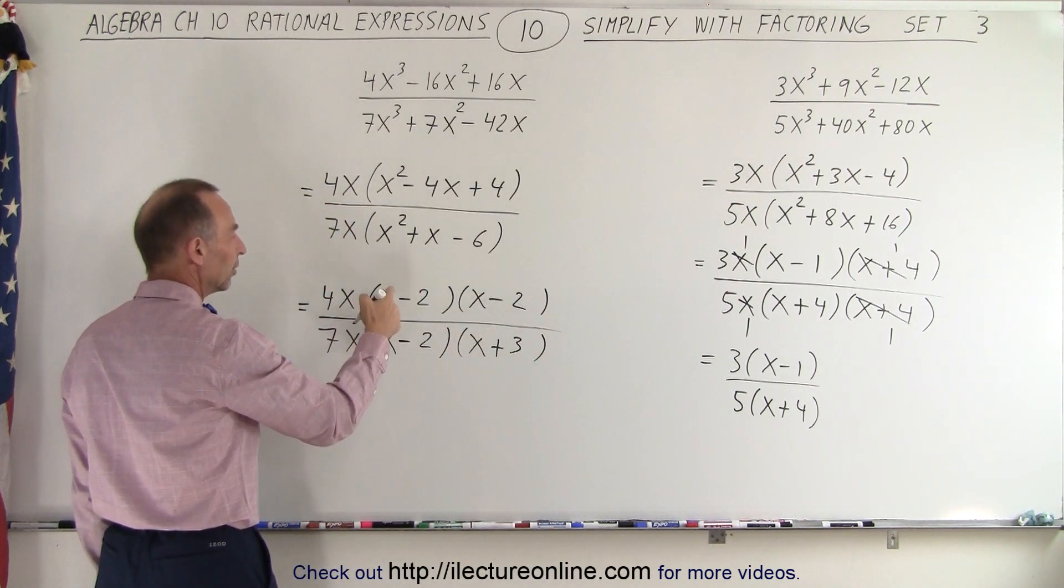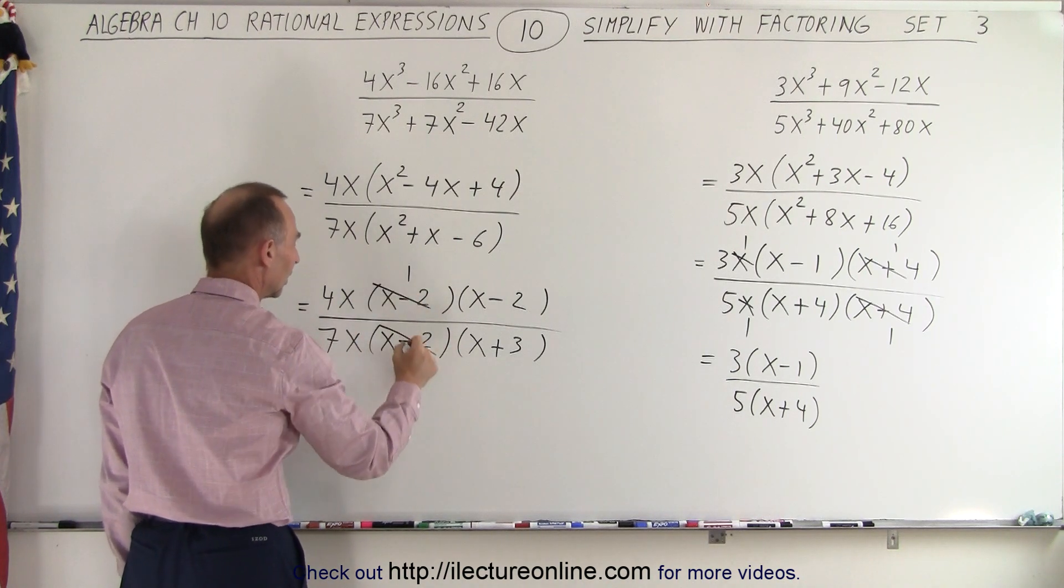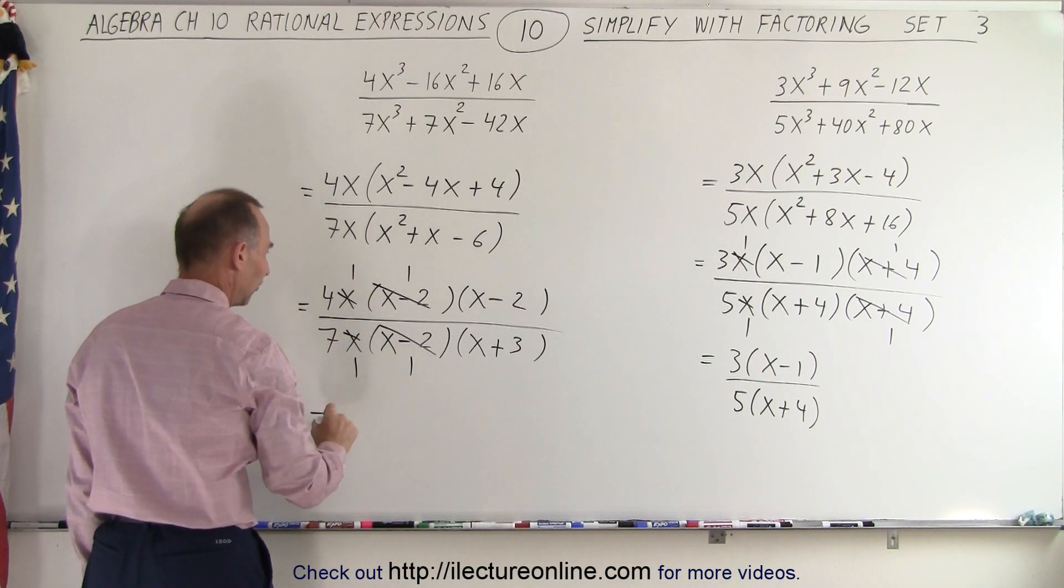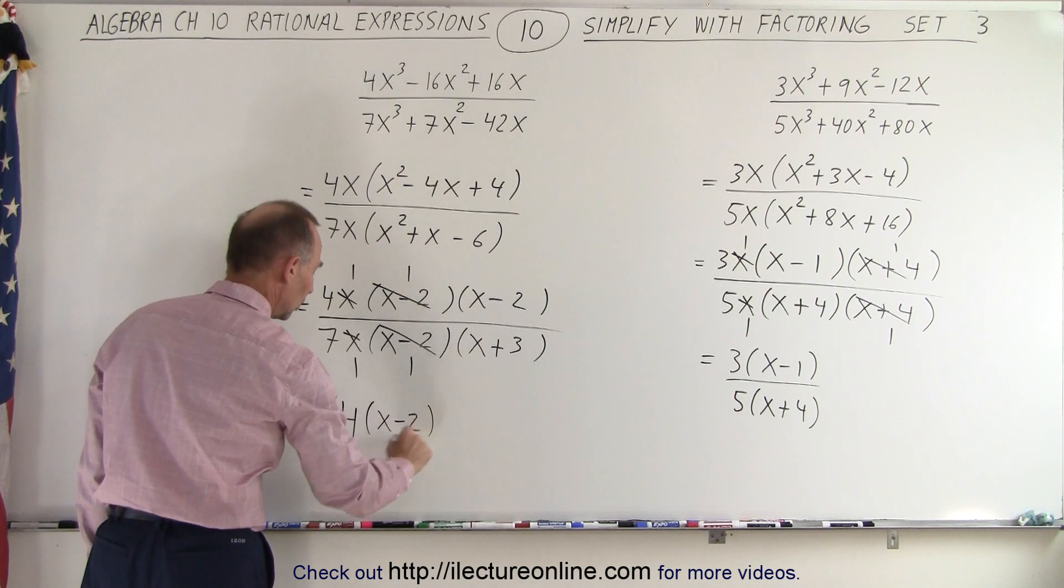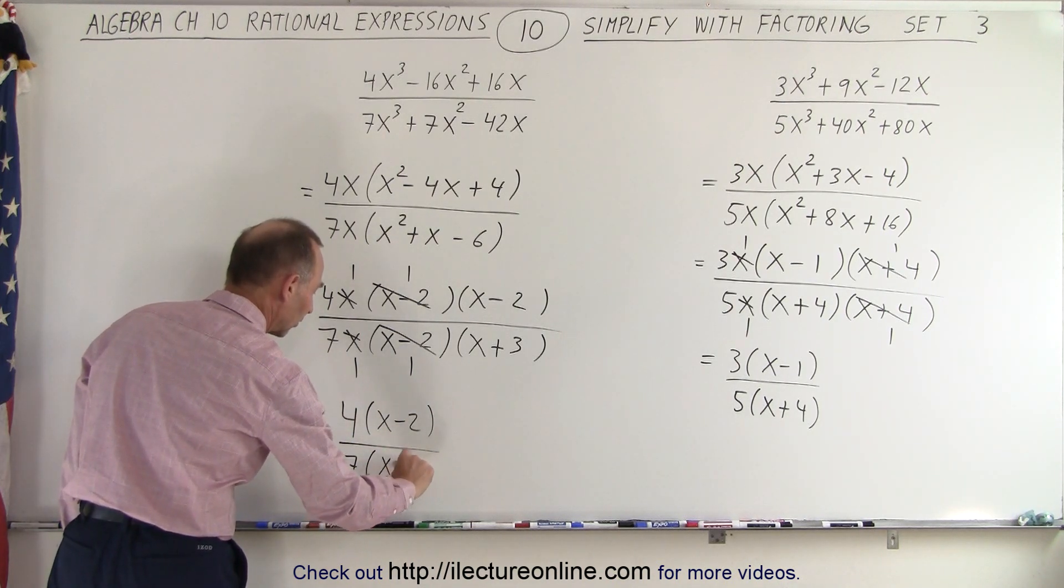Now notice that both numerator and denominator contain an x minus 2. So that cancels out. And we have an x and an x. That cancels out as well. And we're left with, in the numerator, a 4 times x minus 2. In the denominator, we have a 7 times x plus 3.